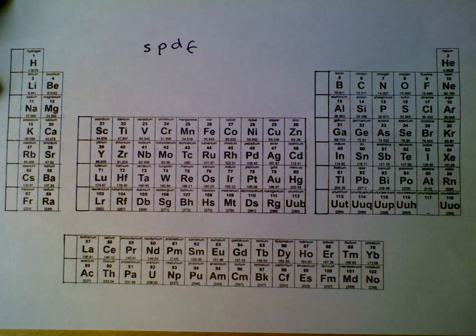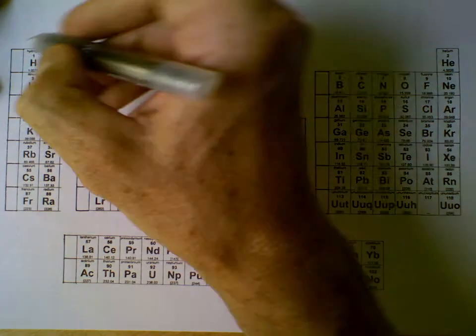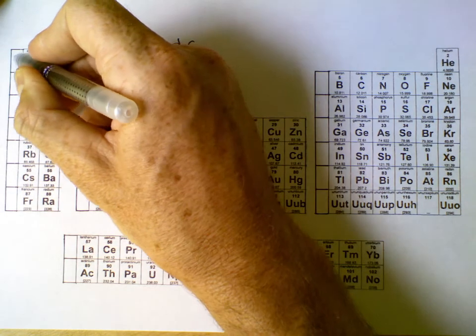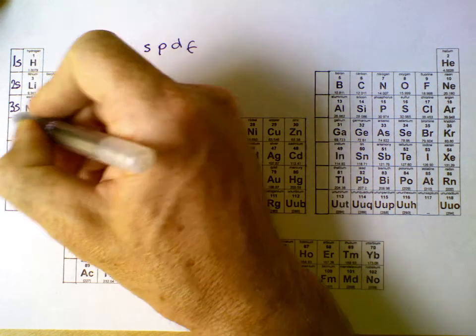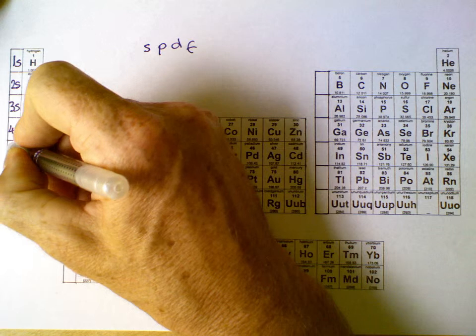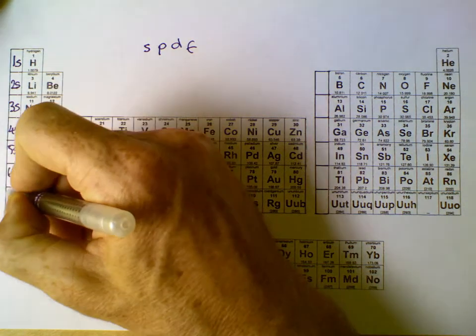We take our periodic table and we start on the far left-hand side with 1. We number downwards, 1S, 2S, 3S, 4S, 5S, 6S, and 7S.